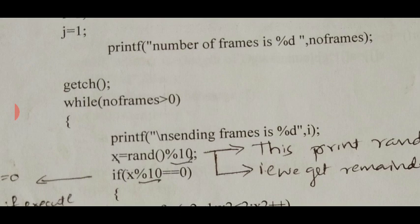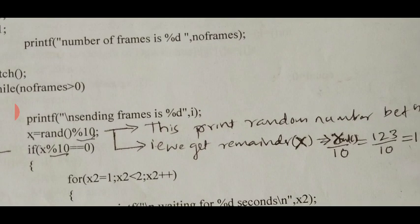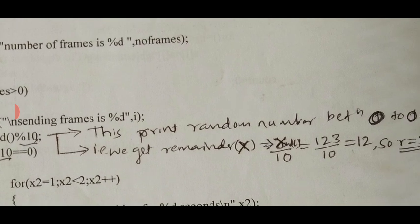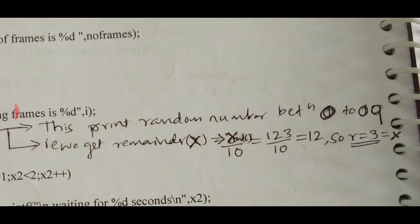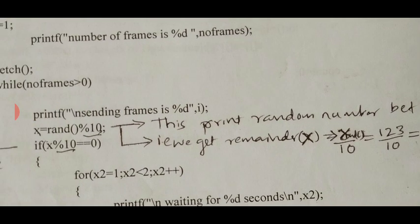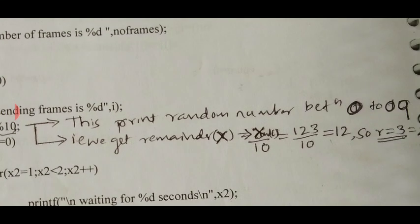X is assigned the value of rand() % 10, meaning we store the remainder when a random number is divided by 10. For example, if the random number generated is 123, then 123 divided by 10 gives remainder 3, so X equals 3. This means X will always be a value between 0 and 9.